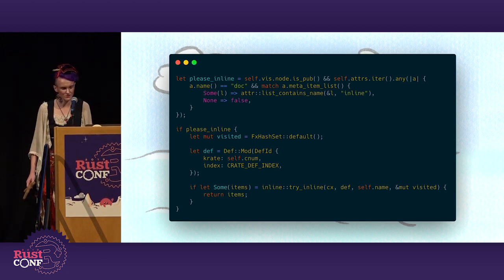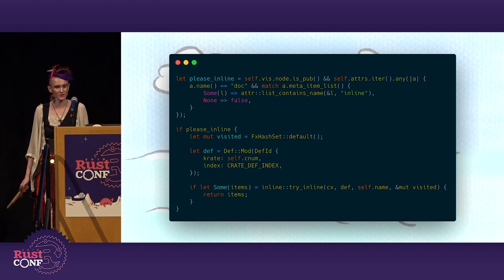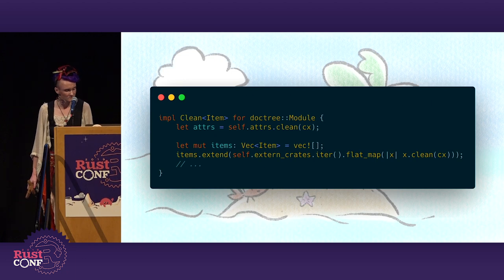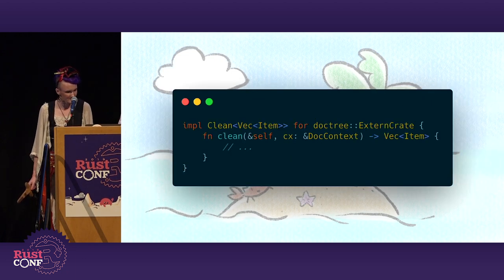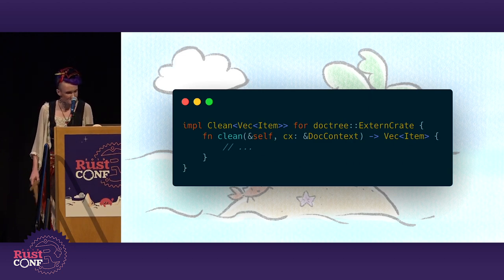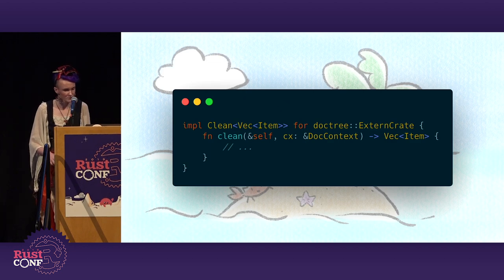The function signature also changes a little bit here. Instead of returning a single item — the crate — we might return the crate and the items exported from the crate. We did a few changes to allow us to return a vector of items. Back where this function is called, we replaced our previous use of map with flat_map. And we changed the impl clean to allow us to return a vector of items instead of a singular item. We also used the vec! macro to wrap the external crate item array we originally returned when we weren't inlining.